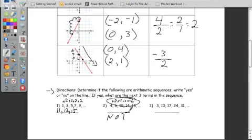Alright, and number 3. To get from 3 to 10, we add 7. We add 7 again. We continue to add 7 every time. So 31 plus 7 gives us 38. 38 plus 7 gives us 45. 45 plus 7 gives us 52. And it is an arithmetic sequence.